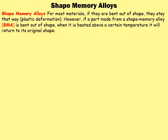The next smart material I'd like to discuss is shape memory alloys. For most materials, if they're bent out of shape they stay that way — this is called plastic deformation. However, if a part is made from a shape memory alloy, often abbreviated to SMA, and it is bent out of shape, when it is heated above a certain temperature it will return to its original shape. So it has a memorized shape which it will return to.